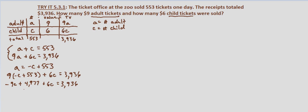Now subtracting 4,977 from both sides, we combine like terms: negative nine c plus six c is negative three c, equals negative 1,041.